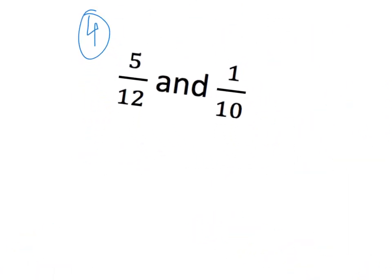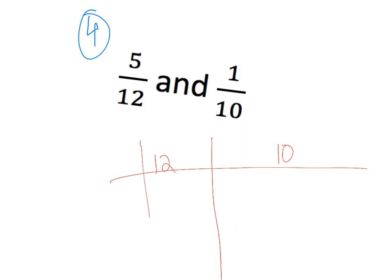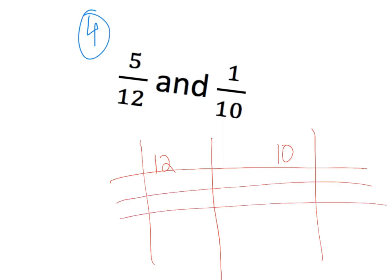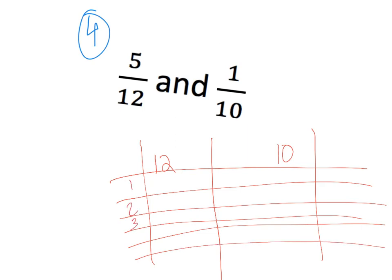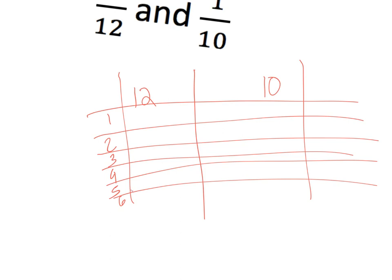Between twelve and ten. So one, two, three, four, five, six — get a little bit of extra space there. We have twelve, twenty-four, thirty-six. All I'm doing is multiplying these two numbers and writing that there — that's giving me the multiples. Four times twelve is forty-eight, five times twelve is sixty, six times twelve is seventy-two.